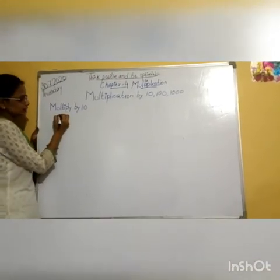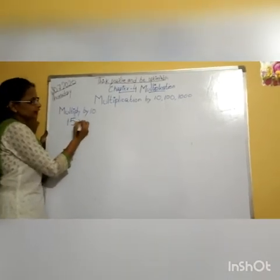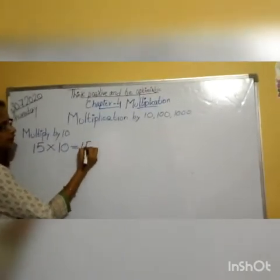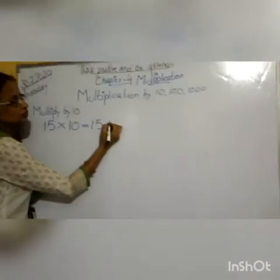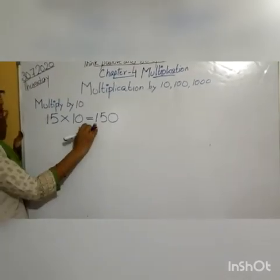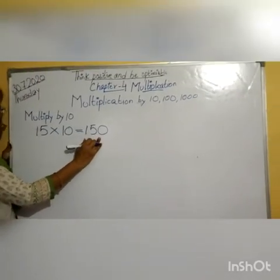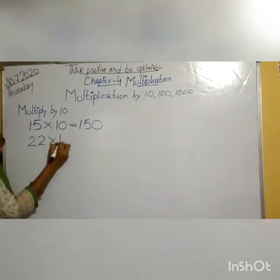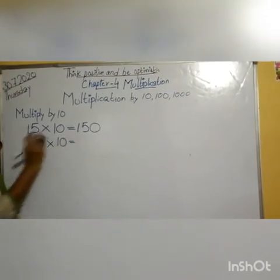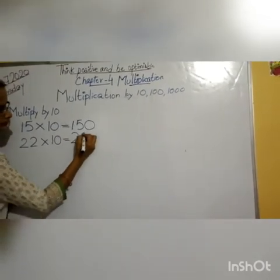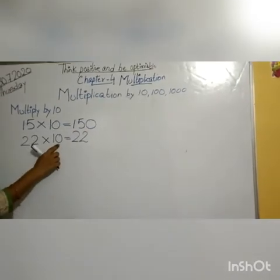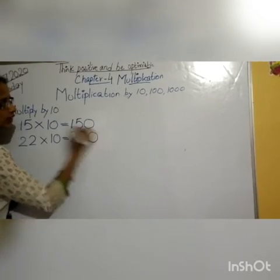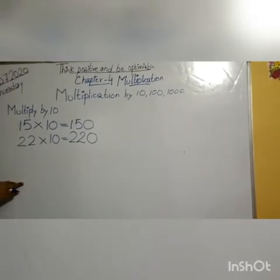For example, take 15. 15 multiplied by 10 — what you have to do? First write 15, just add this zero to the extreme right of the number. The answer is 150. Take one more example: 22 multiply by 10. First write the digit and add this zero to the extreme right. The answer is 220.